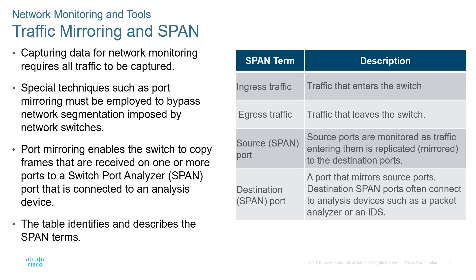Port mirroring is a special technique that requires bypassing network segments imposed by network switches. For example, the destination port may be a trunk port or a specialized port mode that allows it to receive data from all different VLANs. We receive a copy of the frame from the appropriate source SPAN ports.